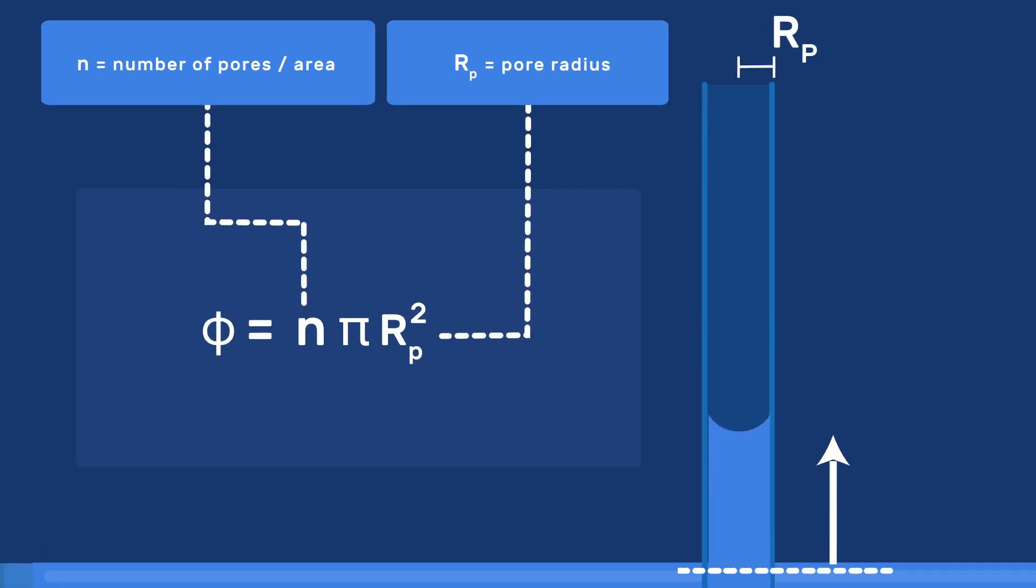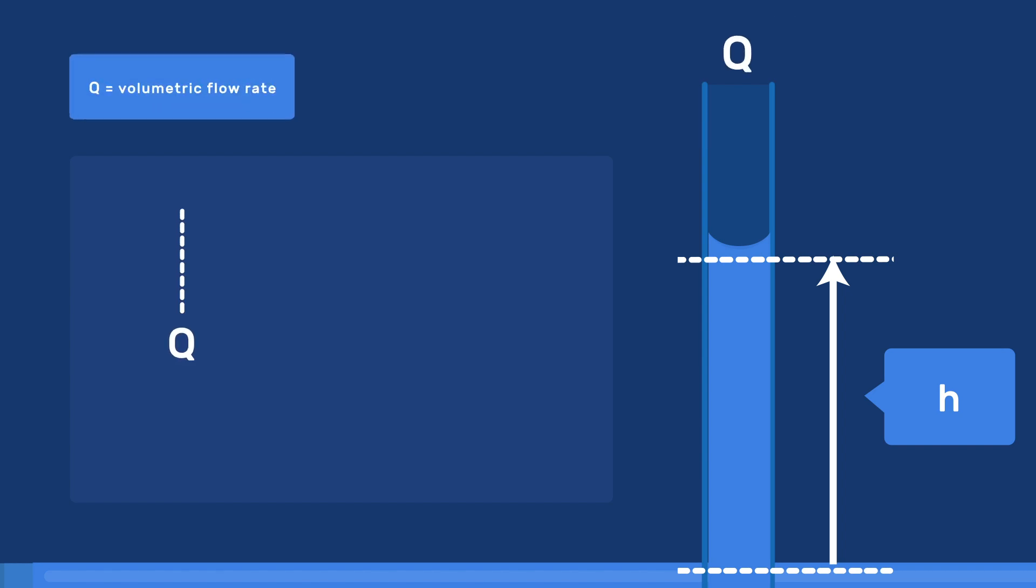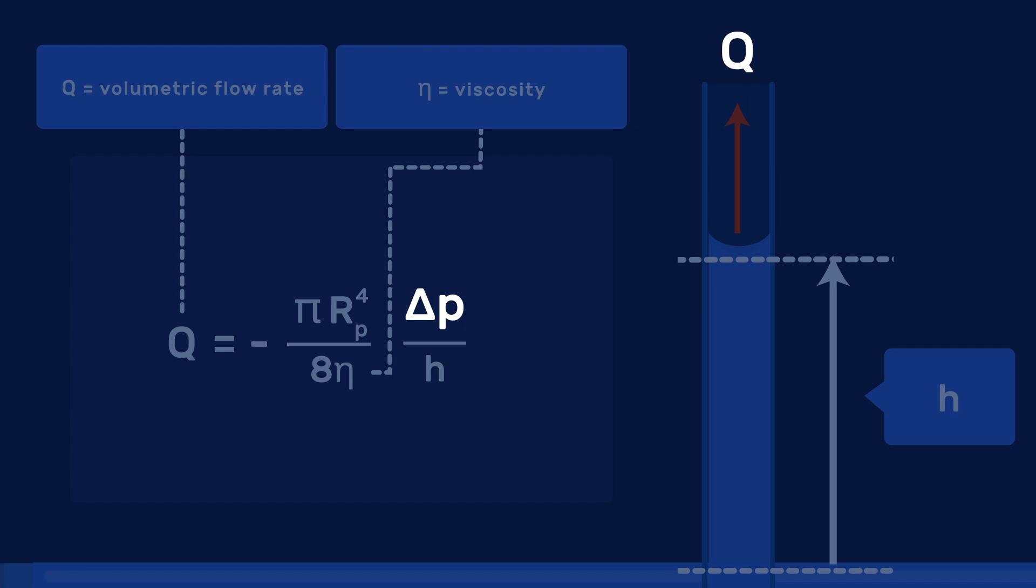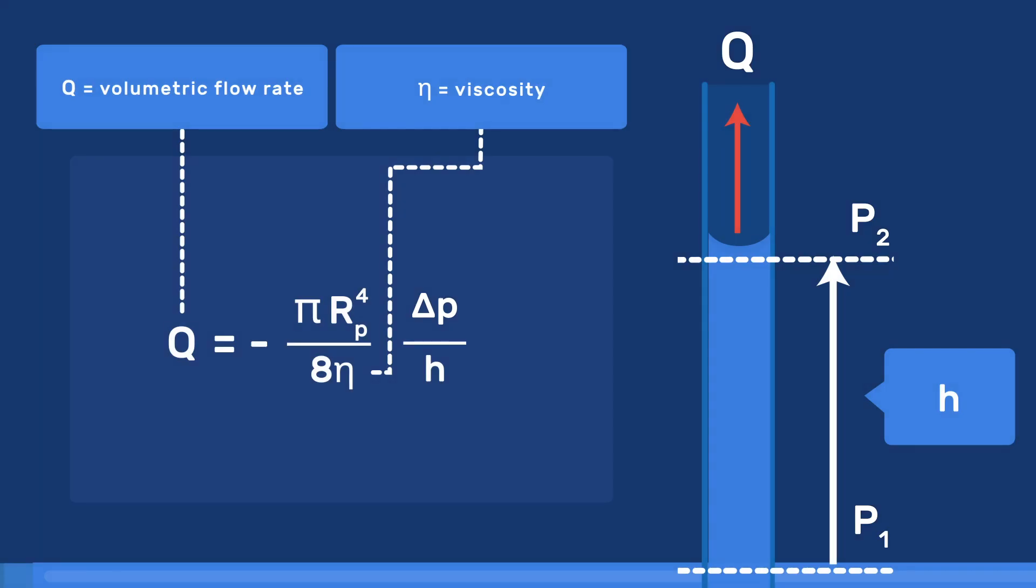If a wetting liquid is sucked into the pores, we have an upward flow, and we'll note h as the height reached at any time t. The volumetric flow rate q through one such cylinder is described by the Poiseuil equation: q is minus pi rp to the power 4 over 8 eta times delta p over h, where delta p is the pressure difference between the bottom and the top of the liquid, and would later simply be taken as the capillary pressure.